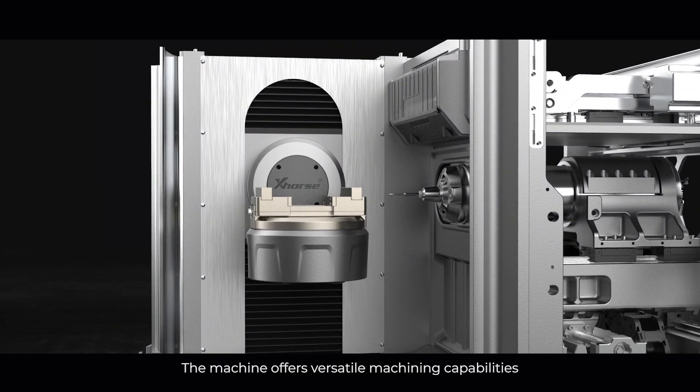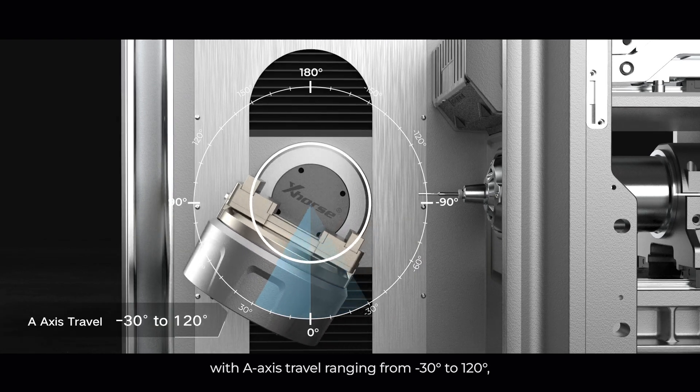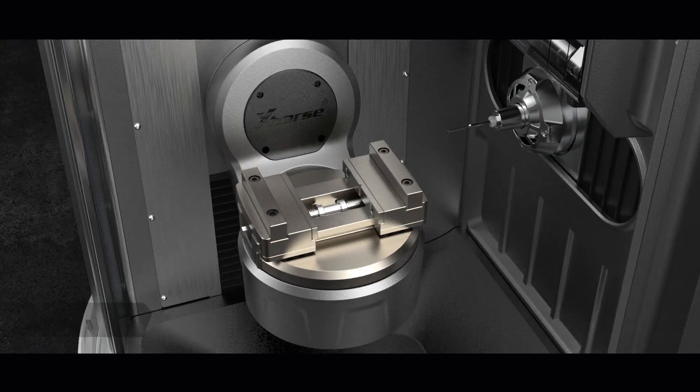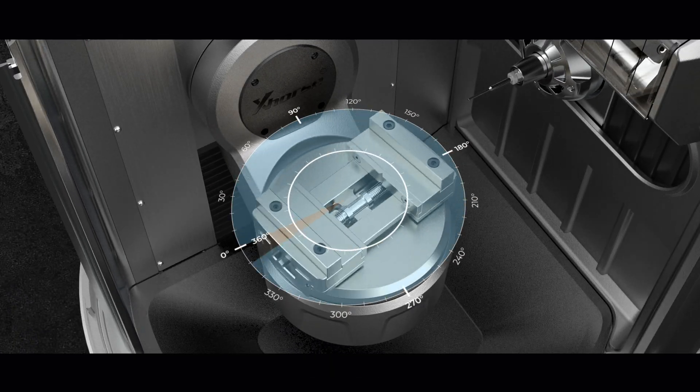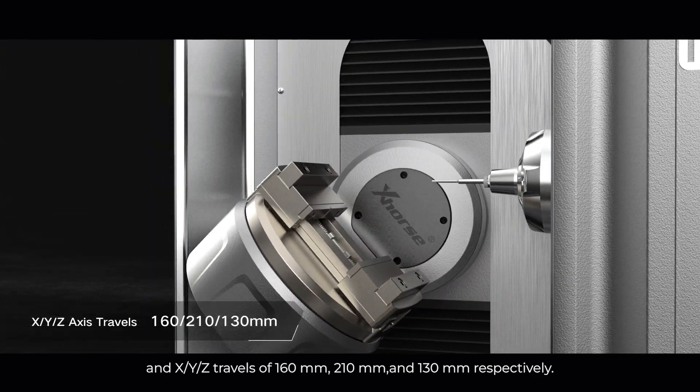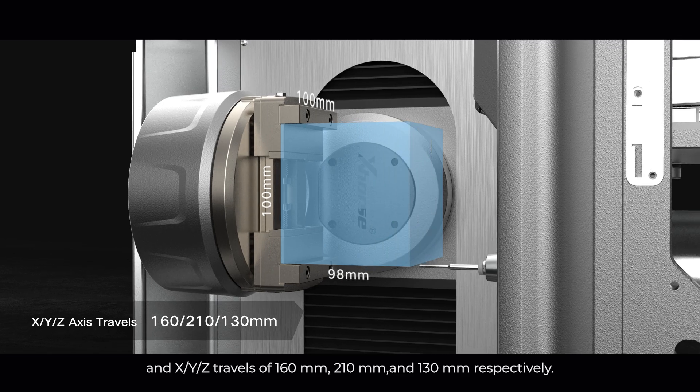The machine offers versatile machining capabilities, with A-axis travel ranging from minus 30 degrees to 120 degrees, C-axis travel of 360 degrees, and X, Y, and Z travels of 160mm, 210mm, and 130mm respectively.